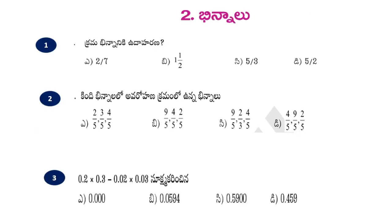The next one is the Dhinala Chapter. If you like this video, please share this video. The next one is Krama Binnan. Krama Binnan means there is 2 by 7. The Krama Binnan means there is equal value and less value. Here we have the same denominator, and here we have the value of 9 by 5. We divide the value of 9 by 5.